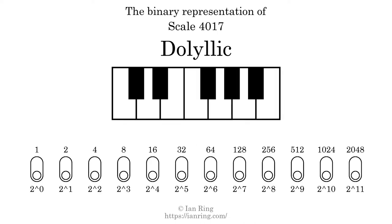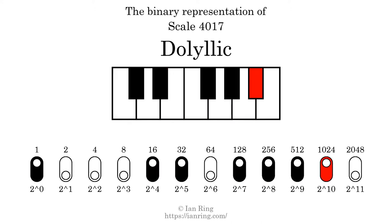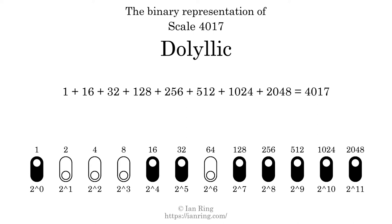The binary representation of this scale is determined by mapping tones of the scale to the binary digits. Each binary digit represents a power of 2. To get the scale number, we add the powers of 2 together. The powers of 2 that are present in the scale, all added together, equals 4017. That is why the scale number, in decimal, is 4017.